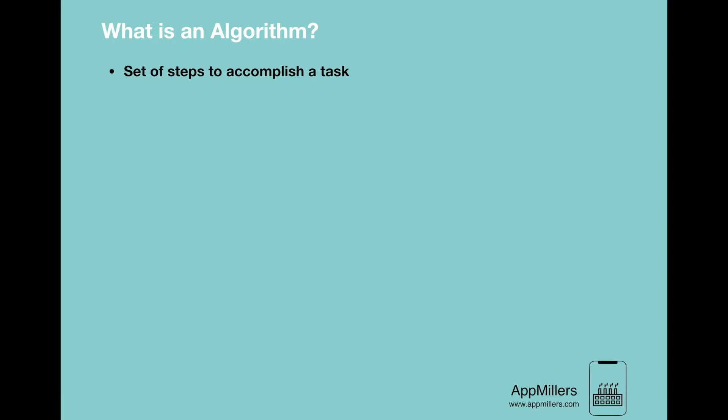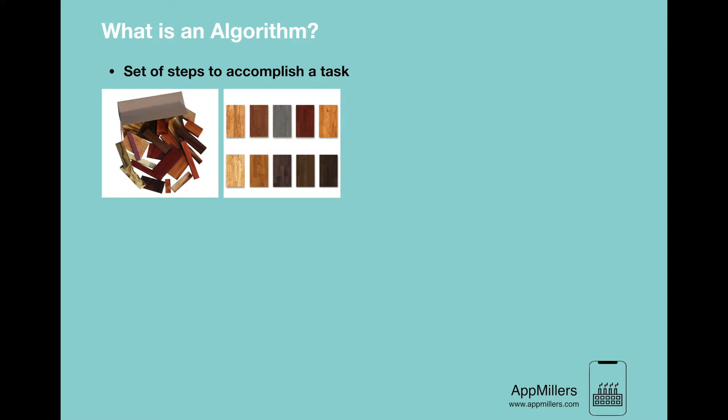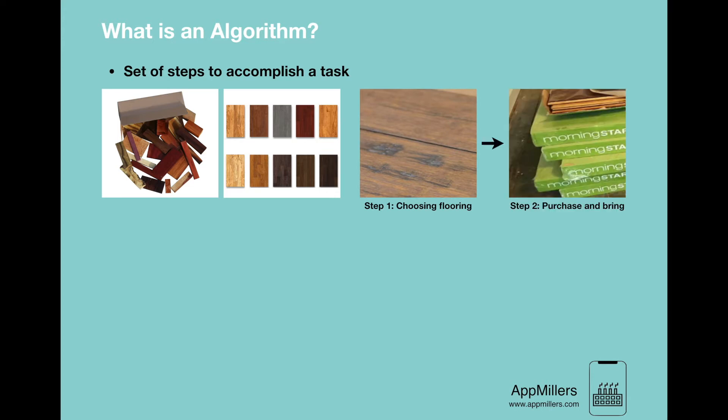Let's look at the previous example that we gave for data structures in which we organize wooden items. So if we want to use these organized wooden items for flooring we need to accomplish several steps. The first step is choosing flooring — which color are we going to use? Then we need to purchase it and bring it home.